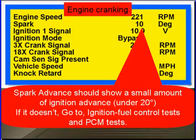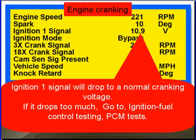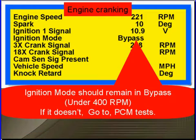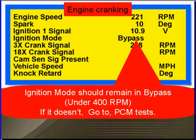If spark advance shows nothing, go to ignition fuel control test and PCM test. Ignition one signal will drop to a normal cranking voltage — if it drops too much, go to ignition fuel control testing and PCM test. Don't forget that the battery and charging system have to be in good condition. The ignition mode should remain in bypass when the RPM is under 400 — if not, go test the PCM.